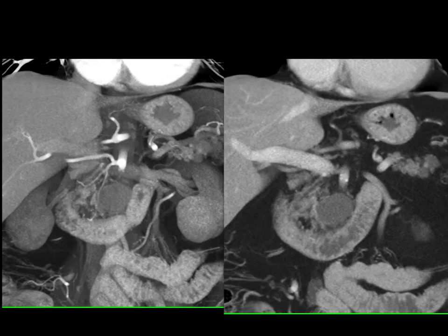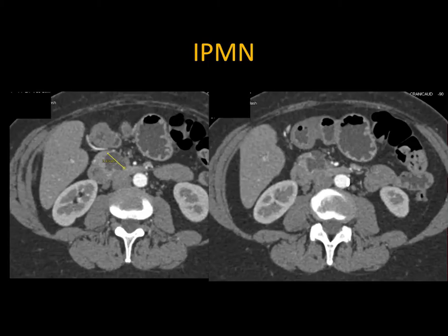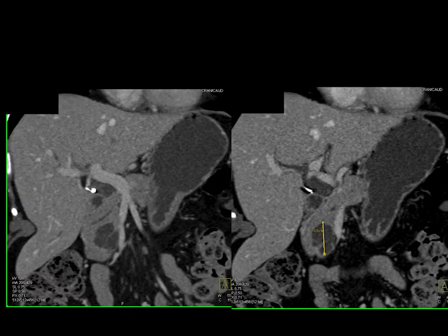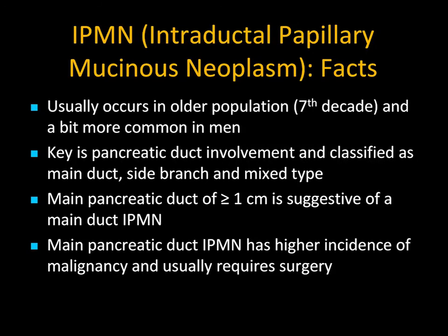IPMNs are typically water density, well-defined, and often connect to the pancreatic duct. Once over 3cm, the past strategy was simply to remove them; now we tend to be more conservative and can do EUS. Thin septations may be present. When septations get thicker or there are nodules, you have to worry about malignancy — an IPMN evolving with high-grade dysplasia. IPMNs are usually in an older population; key is pancreatic duct involvement. If the entire pancreatic duct is over 7mm, it's a main duct IPMN with high malignancy risk and those are typically removed.